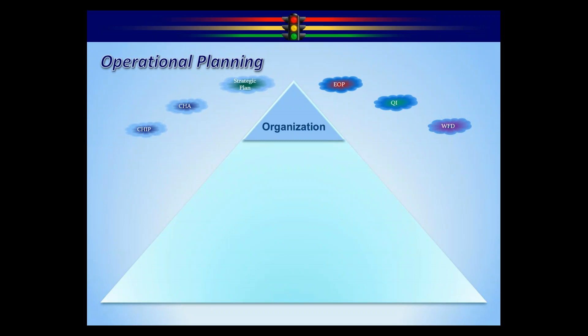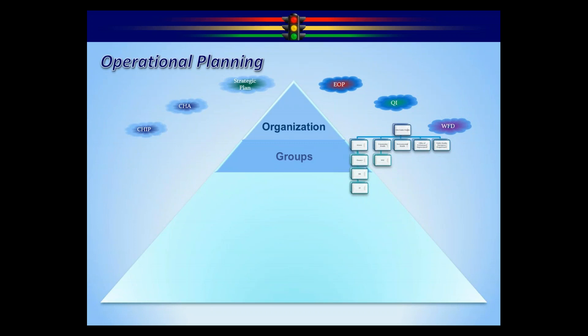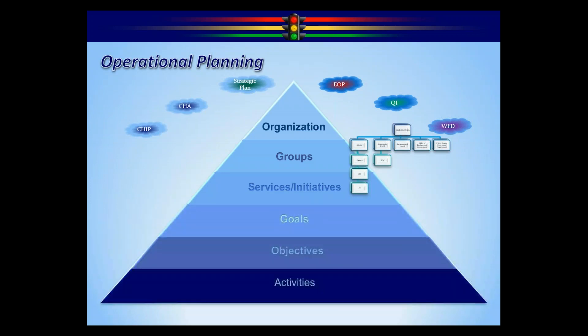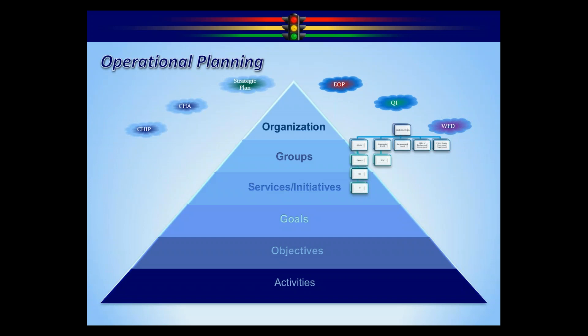As Fred opens up live into the dashboard, you're going to see navigational tabs going from left to right. The very first tab is your health department. The next tab is your groups — workforce development, strategic plan, CHIP, CHHA, community health. Underneath each group are subgroups, services, and initiatives. So if you have your community health department, you'll have a subgroup like a tobacco cessation program. And then underneath those groups, you'll have their own set of services, initiatives, goals, objectives, and activities.